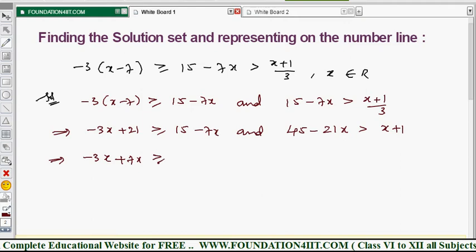That is minus 3x plus 7x greater than or equals to 15 minus 21. And from this, 21x minus x greater than 1 minus 45. Minus 3 plus 7 is 4x, so 4x is greater than or equals to 15 minus 21.